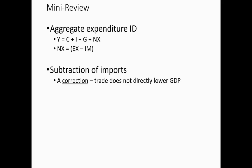Quick review of the aggregate expenditure identity: Y = C + I + G + NX, where C is consumption, I is investment, G is government spending, and NX is net exports (exports minus imports). We subtract out imports as an accounting correction.